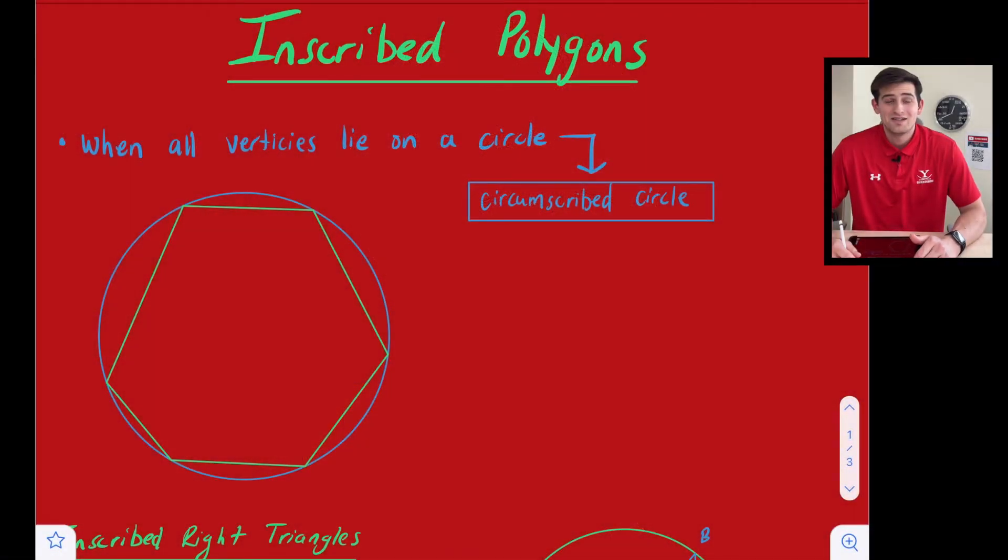Hello everyone, in this video we're going to talk about inscribed polygons. So what is an inscribed polygon? It is just when all the vertices of the polygon lie on a circle.